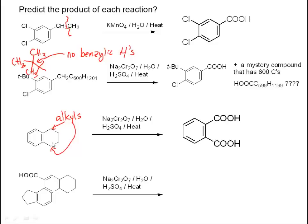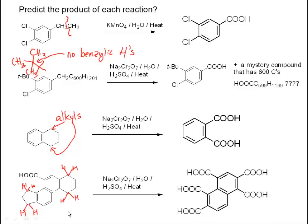In the bottom case, we have a naphthalene ring system, and the oxidation also oxidizes away the rings. Each one of these rings does have benzylic hydrogens. The only complication is that this one has an extra carboxylic acid group on it, and as a result, we carry that along for the ride and end up with a compound that has five carboxylic acid groups in it.